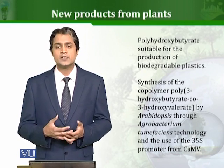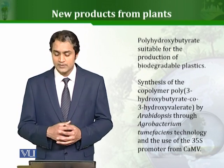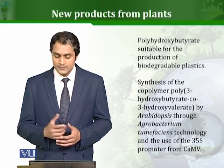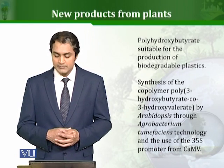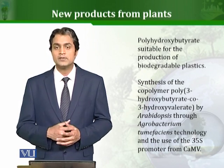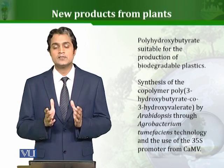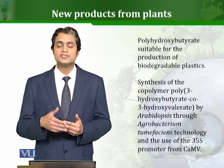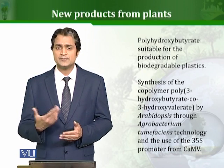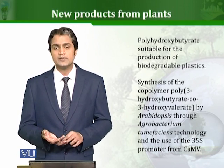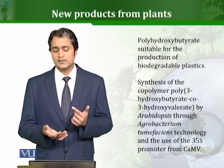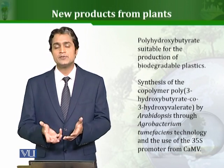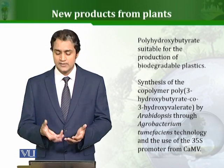Such biodegradable plastics can be achieved by different mechanisms. The major compound used is polyhydroxybutyrate, which is most suitable for the production of such plastics. The synthesis of this polymer has been performed in Arabidopsis thaliana through Agrobacterium tumefaciens technology using the CaMV 35S promoter. The gene for this compound was isolated and transformed into the plants, using the Ti plasmid. This combination of Agrobacterium tumefaciens and the CaMV 35S promoter has been widely and very successfully used to genetically engineer different plant species.